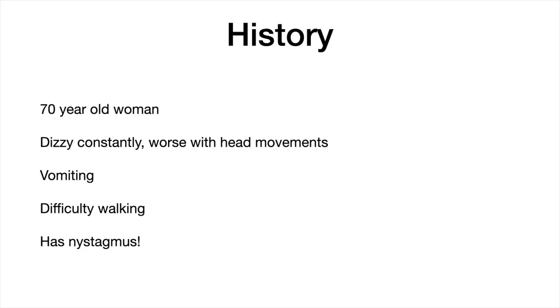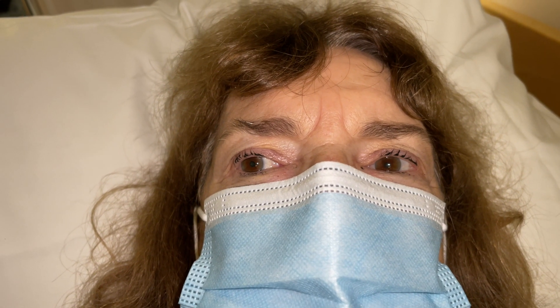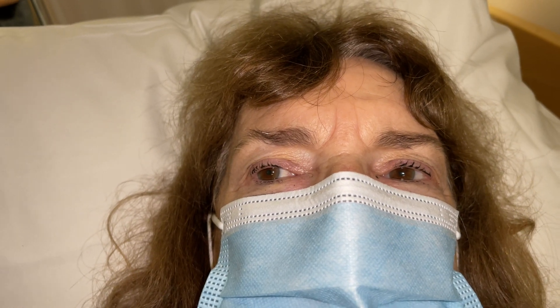First, the history should be consistent with the acute vestibular syndrome. This 70-year-old woman got out of bed that morning and felt very dizzy, which was worse with head movement, somewhat better when still, but never completely resolved. She had vomited and had some difficulty with gait, but was able to walk unaided. A quick glance at her eyes showed horizontal nystagmus with a fast component beating to the left, which certainly fits the definition of acute vestibular syndrome.